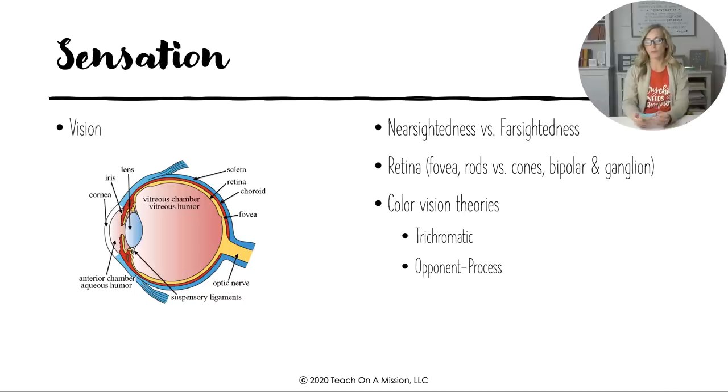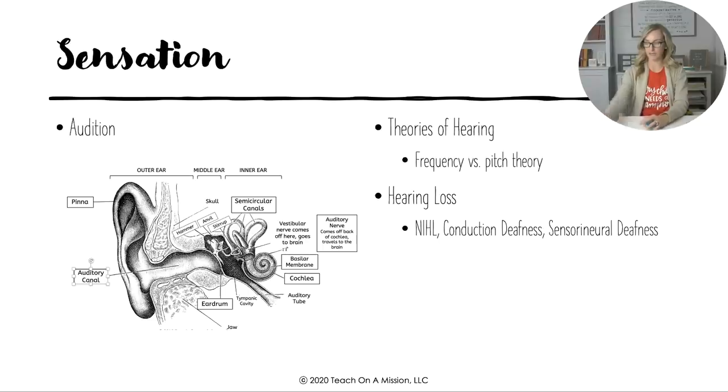Make sure that you understand the color vision theories. Trichromatic theory says that we have three colored cones in our eye and that a combination of any of those is how we see all of the colors. And then opponent process theory says that we have three pairs: red and green, blue and yellow, and black and white. And afterimages are kind of evidence of the opponent process theory.